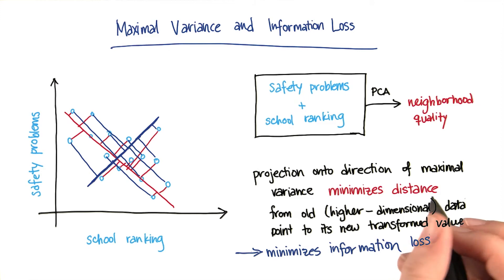it's a mathematical fact that when we do this projection onto the direction of maximal variance, and only onto that direction, we'll be minimizing the distance from the old point to the new transformed point. And what this is necessarily doing is minimizing the information loss.